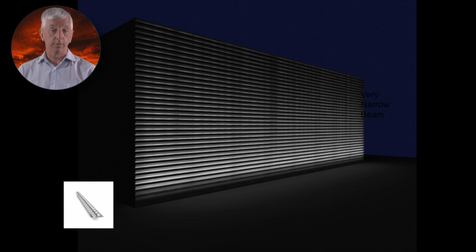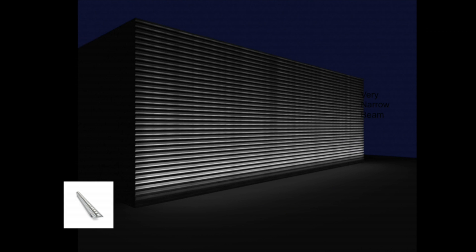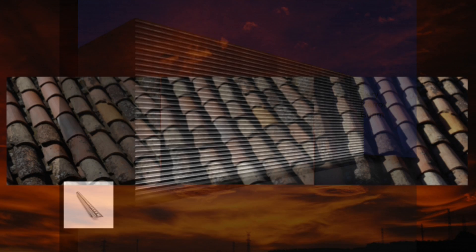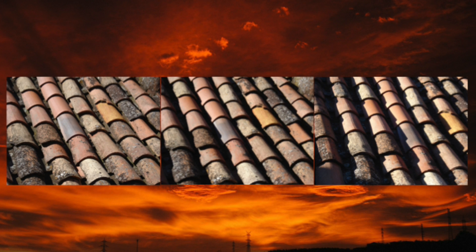Grazing light from a linear source enables us to create the strongest shadows with even light across the surface. Grazing light is just reproducing what we see in the natural world. As the sun moves across the sky, we see surfaces evenly illuminated, but with shadows that increase in depth the lower the sun gets. We can use this information to inform our design when we select light direction and colour.